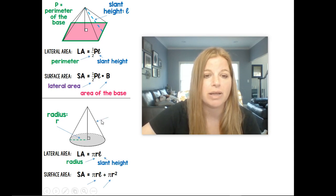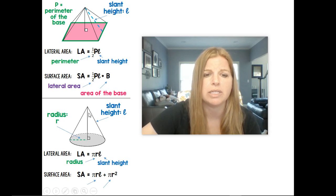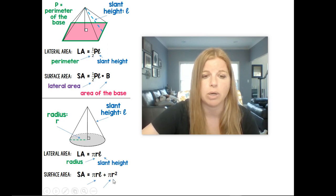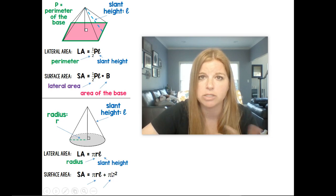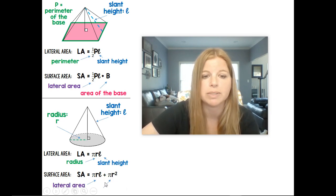And the slant height would be the side here. So the same way you see the slant height on a pyramid, you're going to see that slant height on this here. Now, surface area would be the outside of this cone plus the area of the circle at the bottom. So this little pi R squared, that's the area for our circle. So it's the lateral area plus the area of the base.